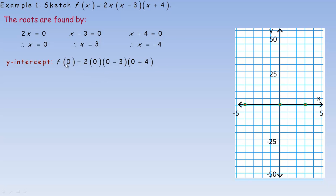In order to find the y-intercept, we put 0 in place of x. So 2 times 0 times (0 minus 3) times (0 plus 4). Now 2 times 0 is 0, this would be negative 3, and 0 plus 4 is 4. If we multiply 0, negative 3, and 4, we get 0. So f(0) is 0. This point right here, this x-intercept of 0, is also the y-intercept.